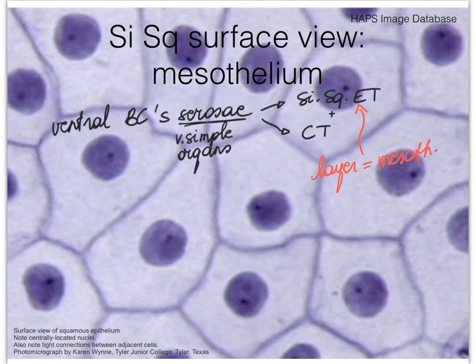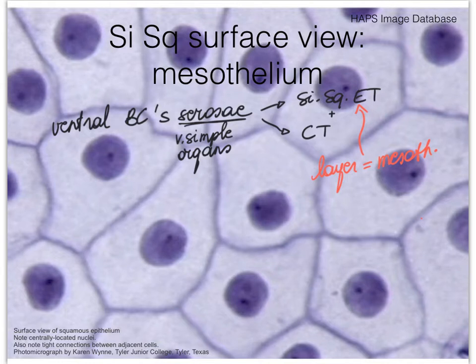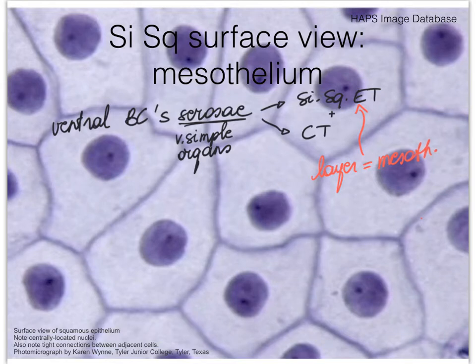This layer of simple squamous epithelial tissue we can refer to as the mesothelium. Remember, you could be asked what kind of tissue this is, or what is the name of the layer created by this tissue. When you're asked for a tissue name, you need to stick to the nomenclature — the classification system of epithelial tissues based on number of cell layers and shapes of cells — then there are also two oddball tissues that still belong to either simple or stratified epithelial tissues.